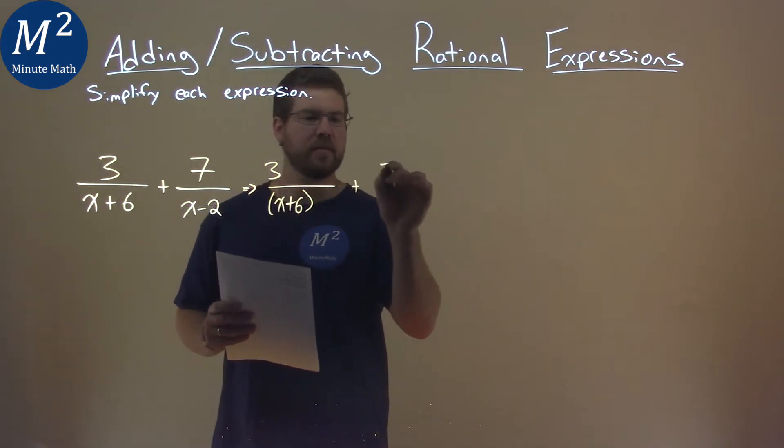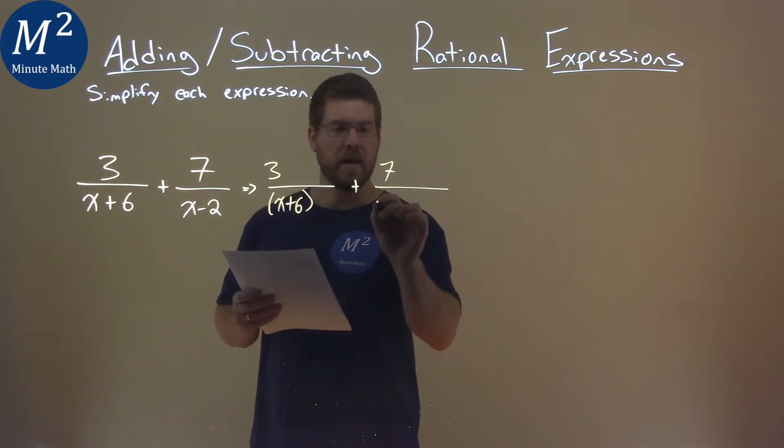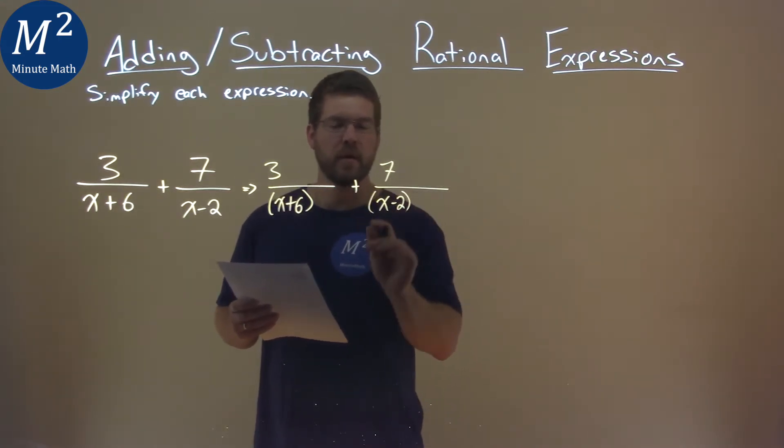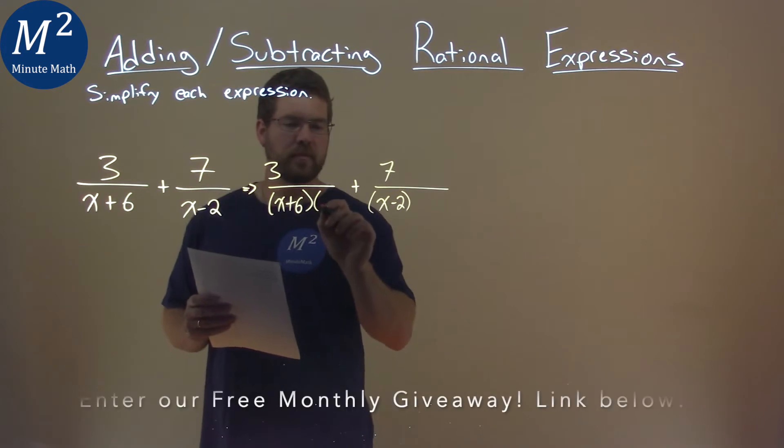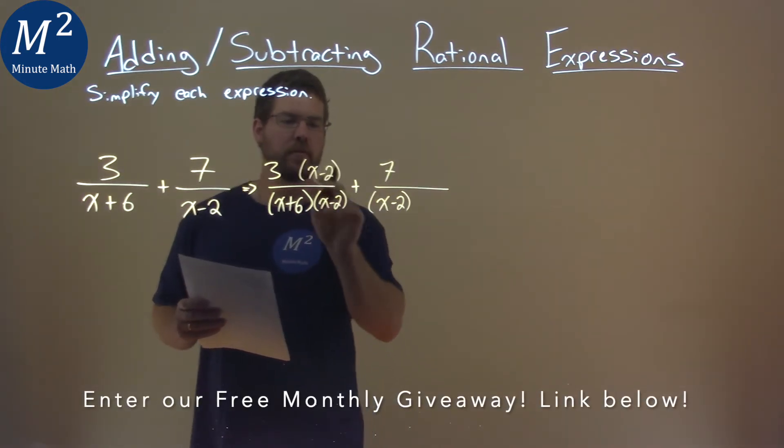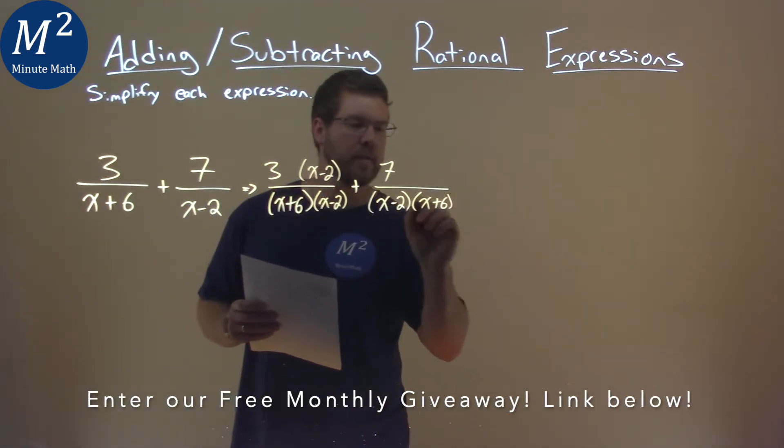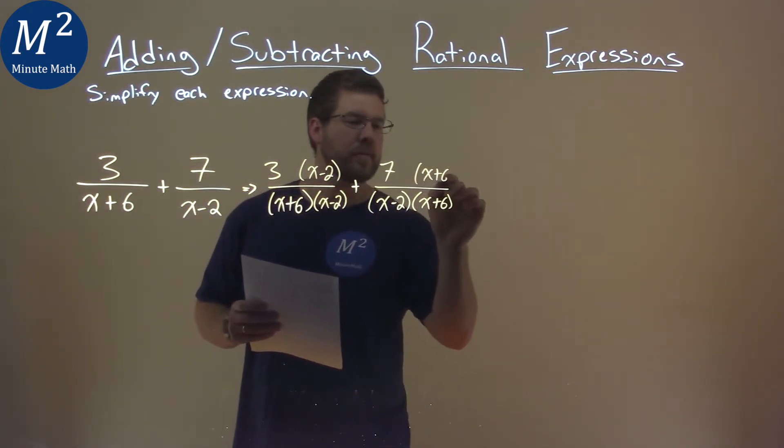plus a 7 over the x minus 2, and now I'm going to take that base x minus 2 and put it over itself. Same thing with x plus 6, add it down there, and x plus 6 up here.